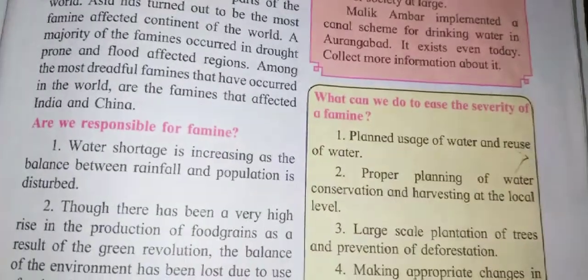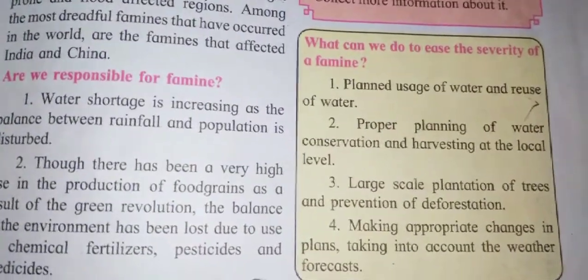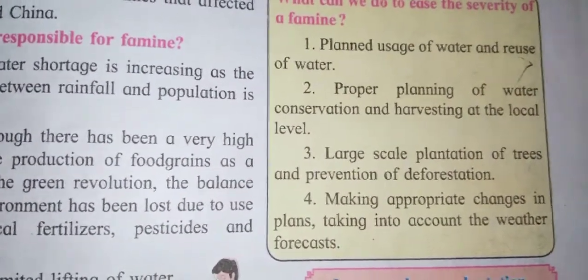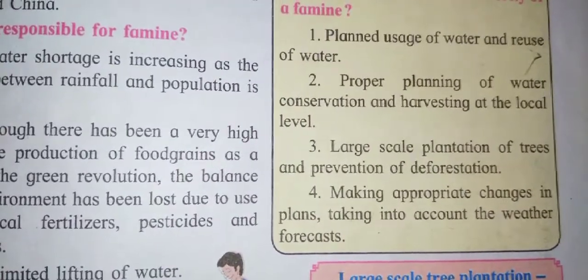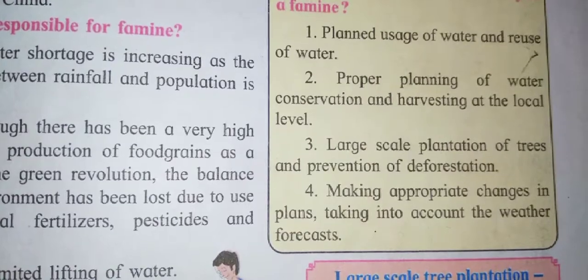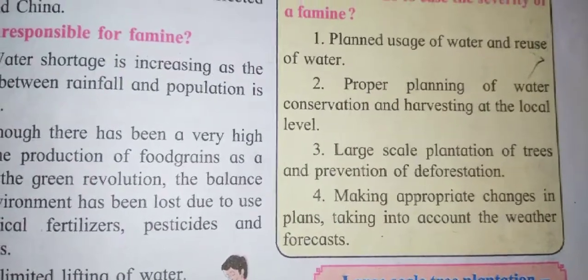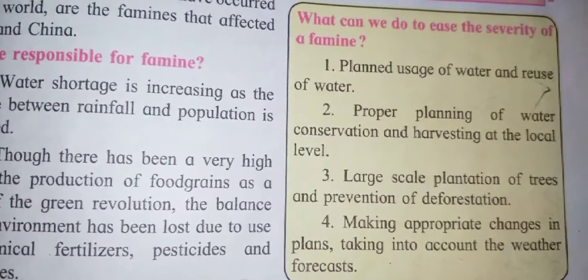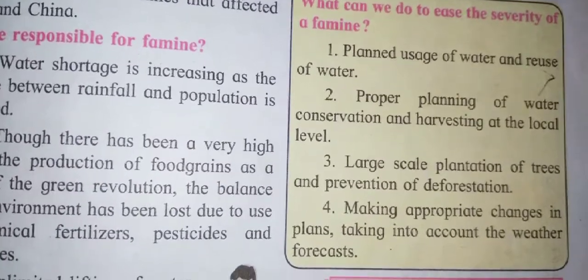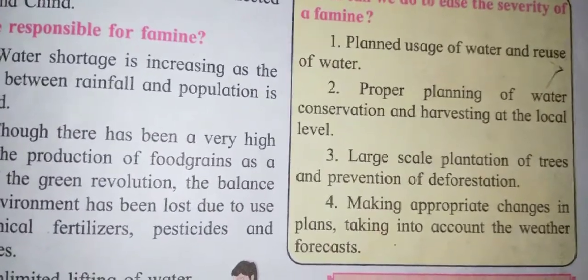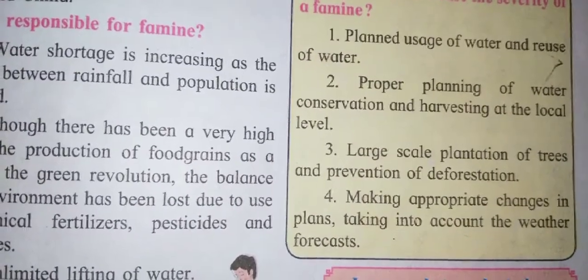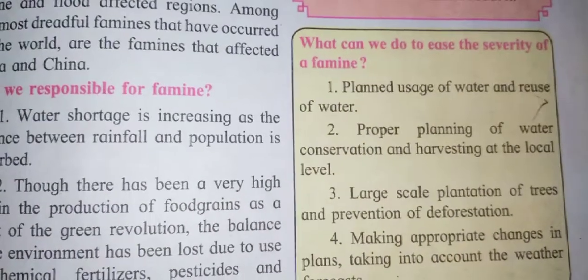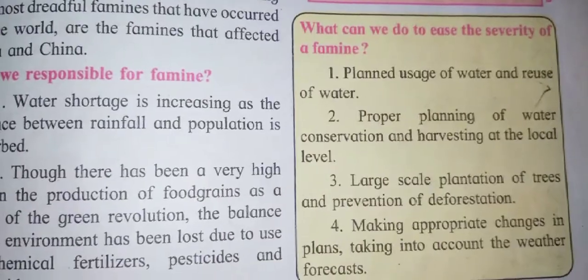What can we do to ease the severity of a famine? First is planned usage and reuse of water. Second is proper planning of water conservation and harvesting at the local level. Third is large-scale plantation of trees and prevention of deforestation. Fourth is making appropriate changes in crops, taking into account the weather forecast.